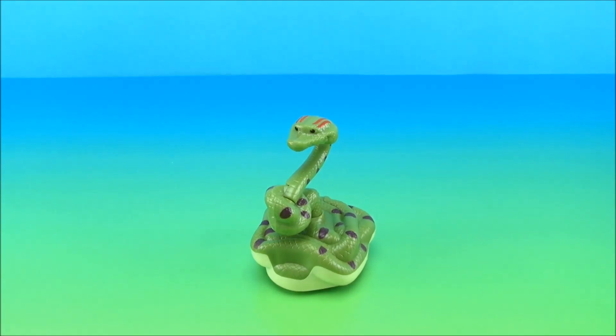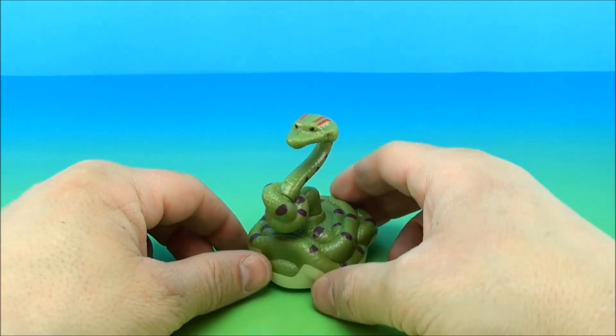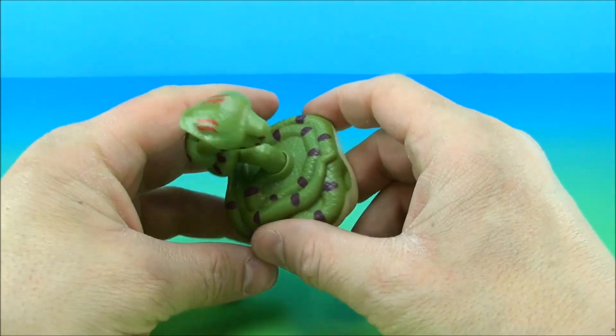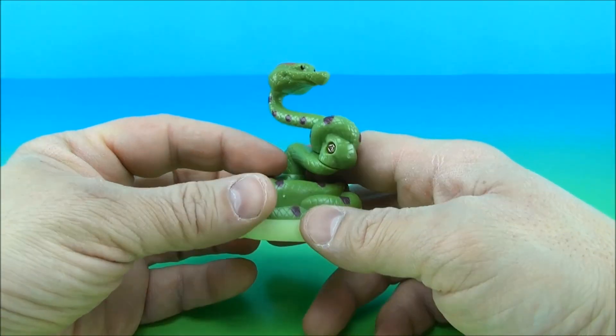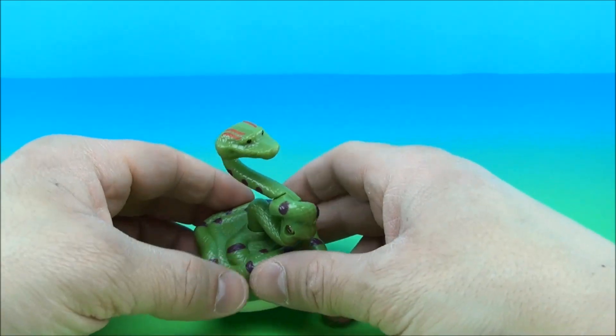All right. Now we've got Larry. Larry the snake. And this guy is a pullback toy. But he looks really cool. He's just all coiled up. I love the paint scheme on him. He looks extremely fun.